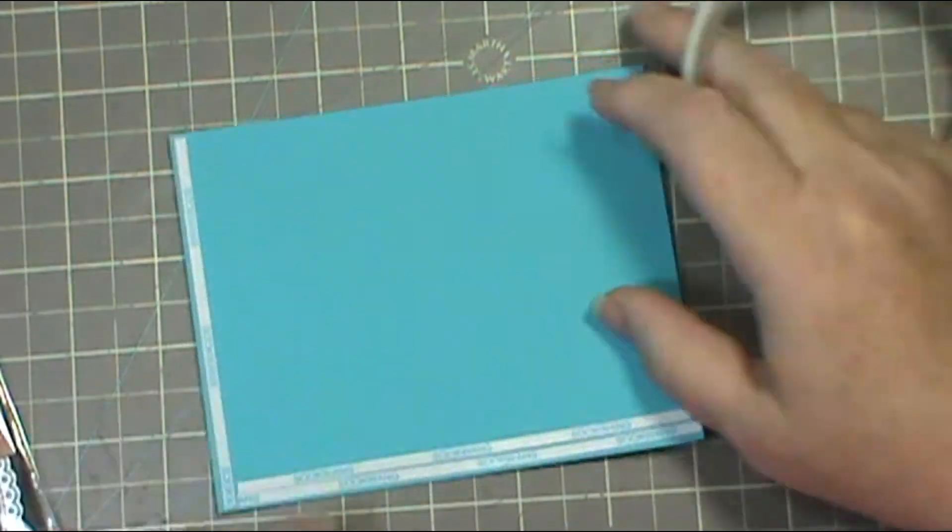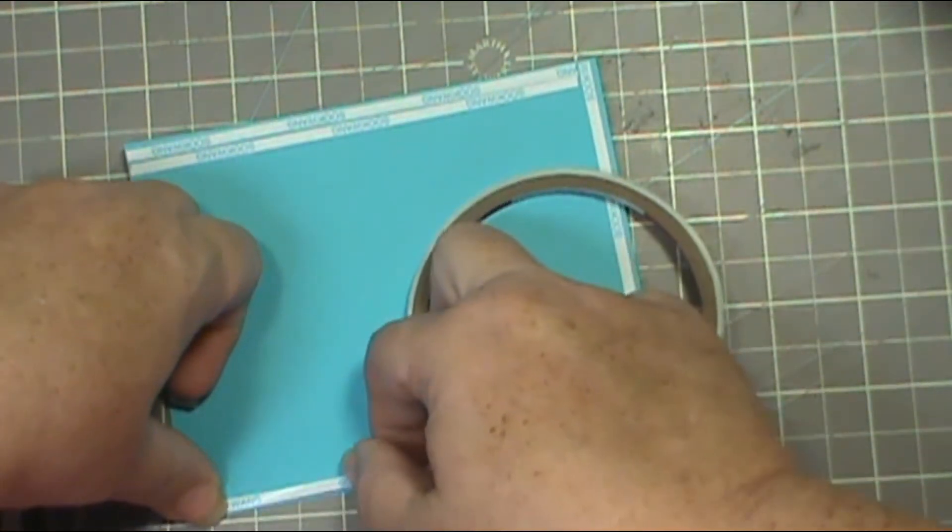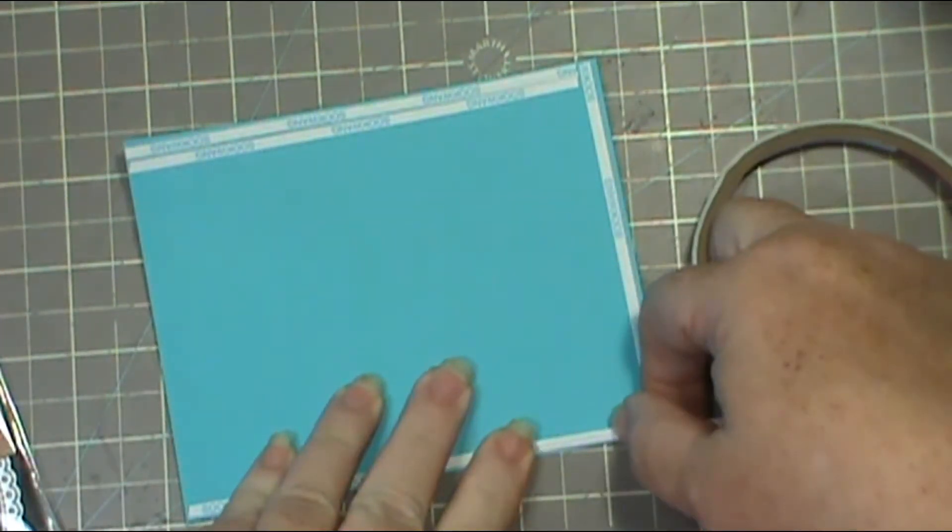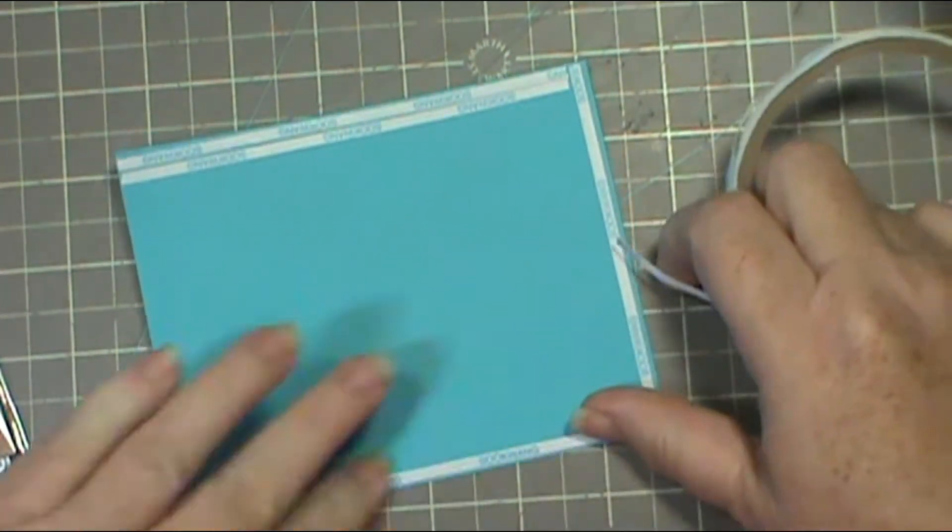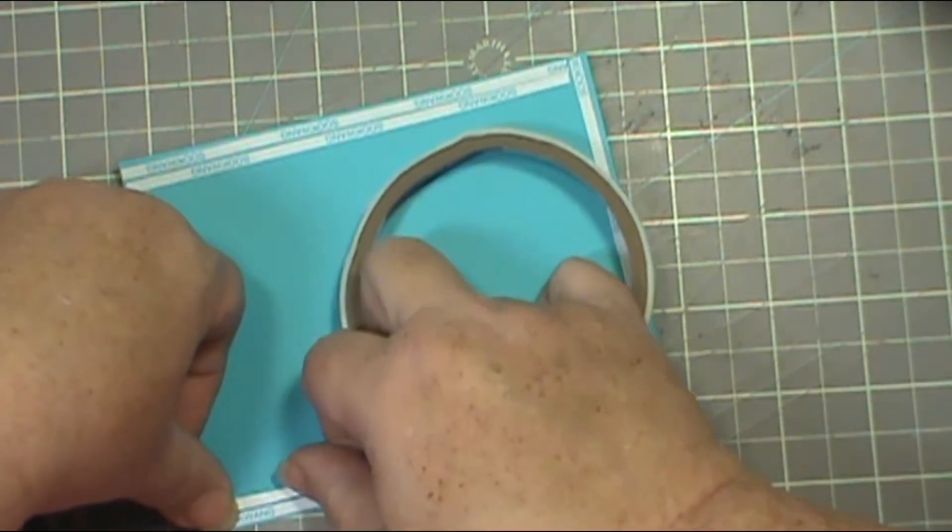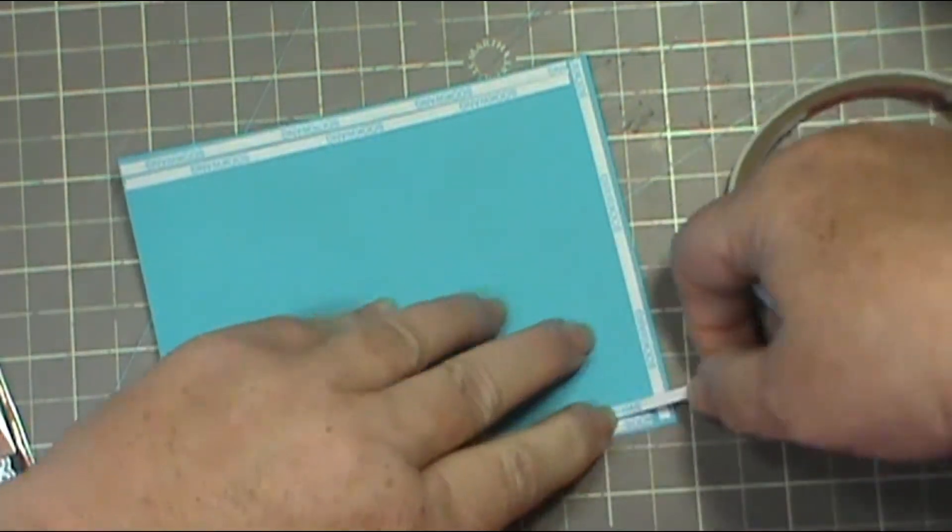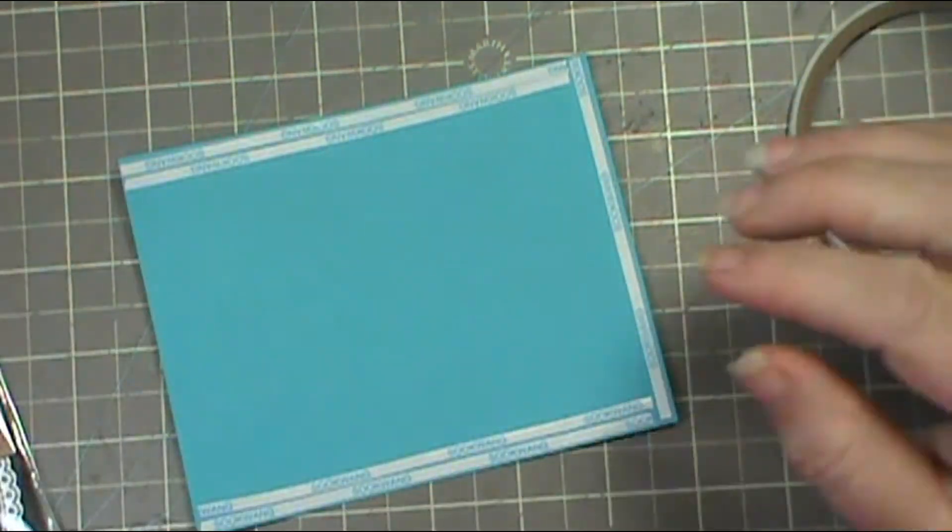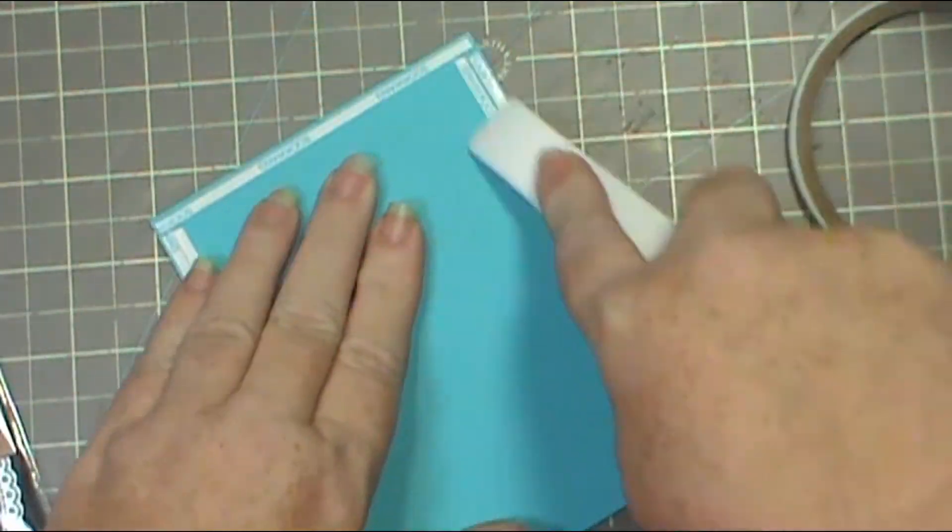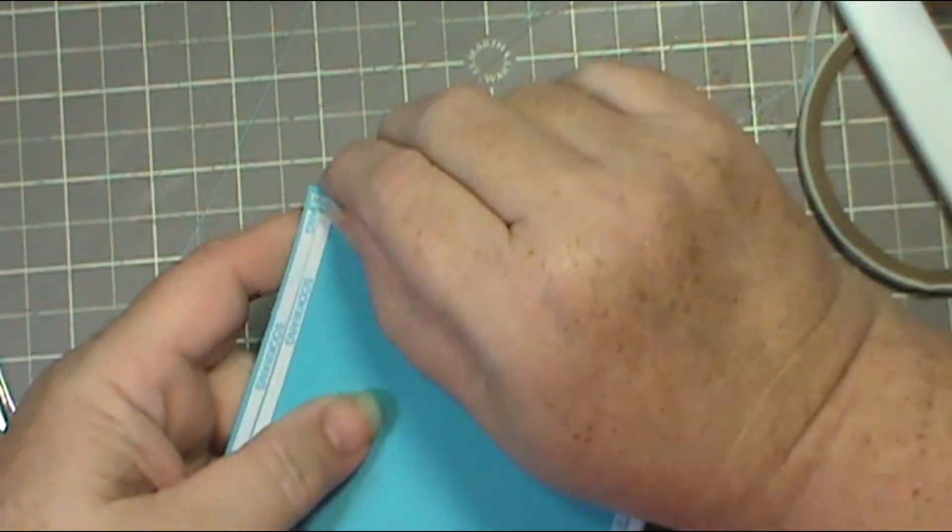You just put your tape on three sides - the short side, one short side, and both long sides. Because I want to make sure that this sticks really good, I always take my bone folder and just go over it, make sure it's all good and pressed down so I know that I've got it good and tight.